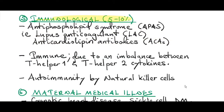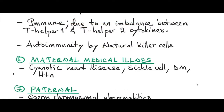Immunological causes account for 5-10% of miscarriages. One of them is antiphospholipid syndrome, including lupus anticoagulant and anti-cardiolipin antibodies. These antibodies cause the trophoblast to stop differentiating and functioning, activate the complement pathways, and cause release of local inflammatory mediators like cytokines and interleukins. This pathogenesis results in fetal hypoxia and fetal destruction, causing a miscarriage. Another immunological factor is an imbalance between T-helper 1 cells, which produce pro-inflammatory cytokines, and T-helper 2 cells, which produce anti-inflammatory cytokines.